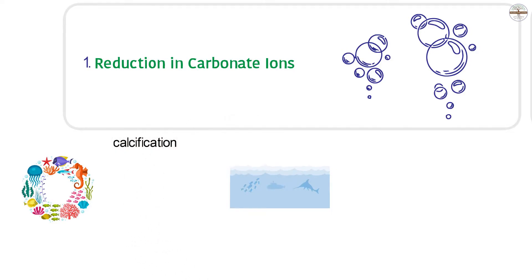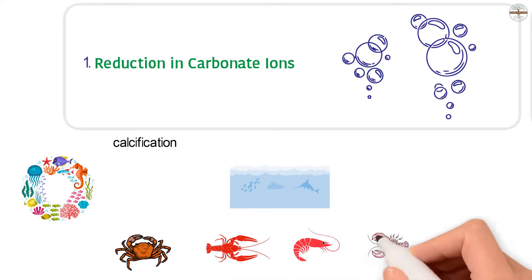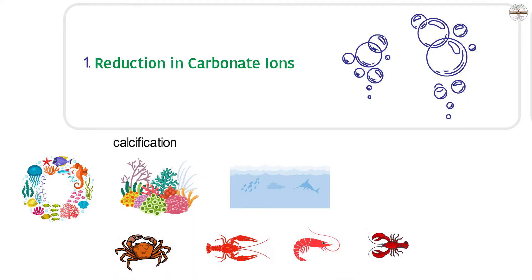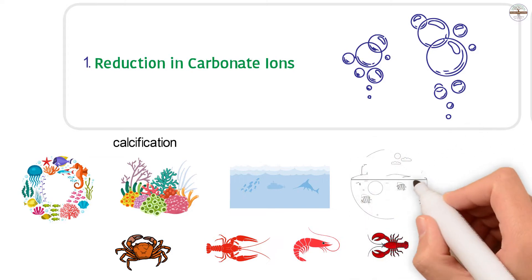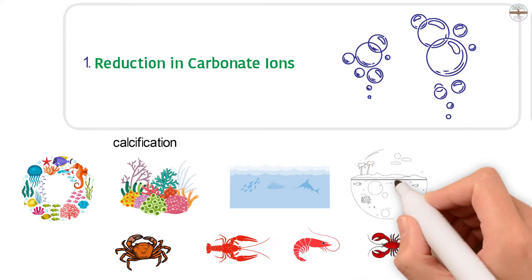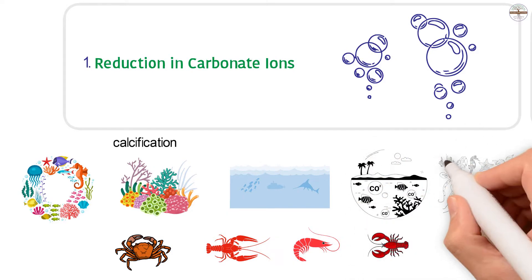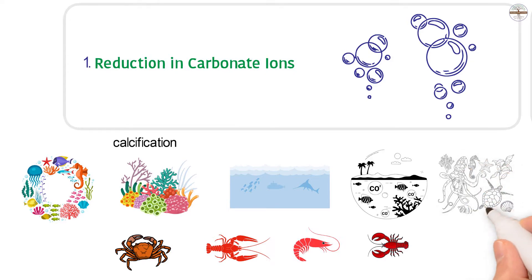Crustaceans such as crabs, crayfish, shrimps, and lobsters also use carbonate ions to make calcium carbonate shells. Basically, ocean acidification causes a chain of chemical reactions in the ocean water that make carbonate ions less available. Then, corals and shelled animals will struggle or die out.